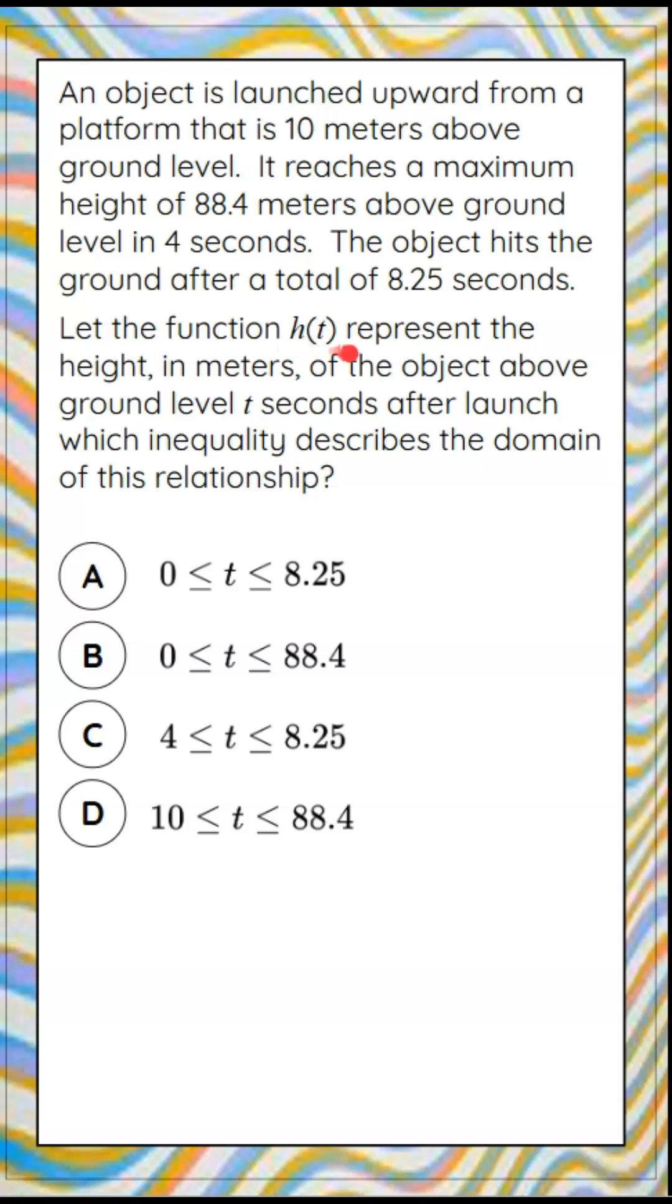We're going to let the function h of t represent the height in meters of the object above ground level t seconds after the launch. And we're asked which inequality will describe the domain of this relationship, and we're given four answer choices.